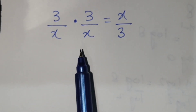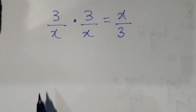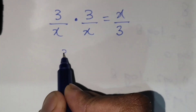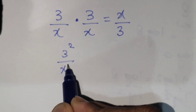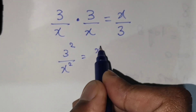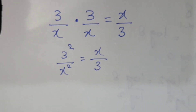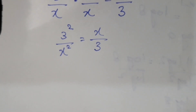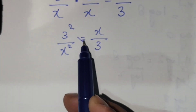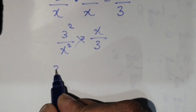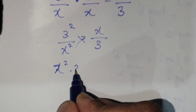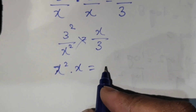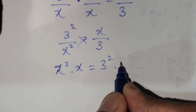We have to find the value of x. We can write the left-hand side as 3 squared over x squared, which equals x over 3. By cross-multiplying, x squared times x equals 3 squared times 3.